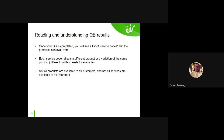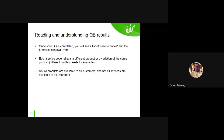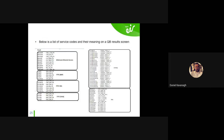Each service code reflects a different product or variation of the same product. Not all products are available to all customers, and not all services are available to all operators. Some operators only sell DSL, some only sell fibre to the home, some only sell fibre to the cab. So depending on what you sell, you might or might not see all of these results on your prequel.